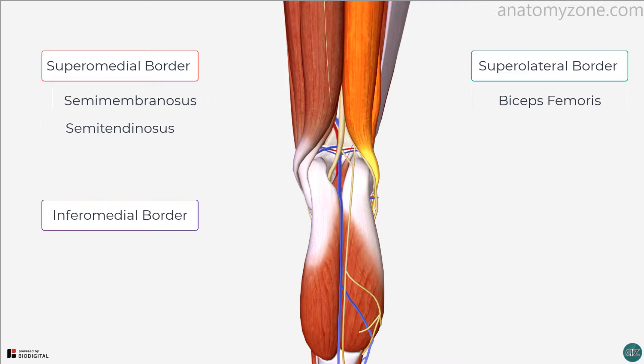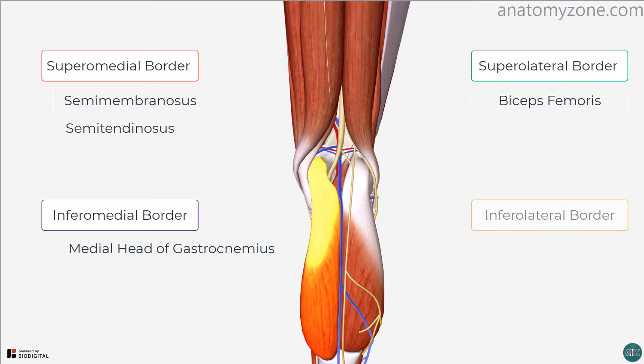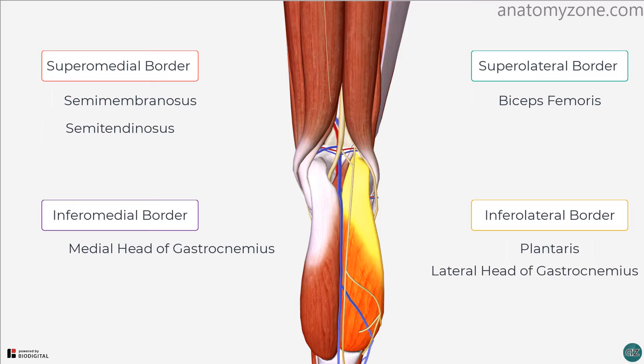The inferomedial boundary is formed by the medial head of the gastrocnemius. The inferolateral boundary is formed by the plantaris and the lateral head of the gastrocnemius muscle.